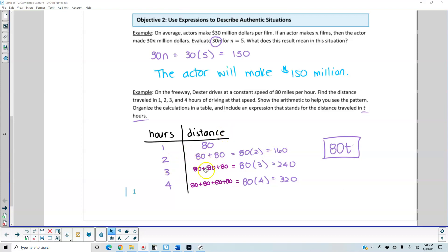In 3 hours, it's 80 plus 80 plus 80, which equals 80 times 3, which equals 240. In 4 hours, we have 80 plus 80 plus 80 plus 80, which is the same thing as 80 times 4, which equals 320.